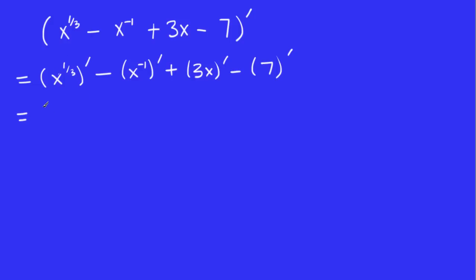Well, the derivative of this, we can do that right now. It's 1 3rd x to the 1 3rd minus 1 is negative 2 3rds. And here, what do we have? Let's use brackets just because there's a lot of negative signs and we don't want to make a mistake.